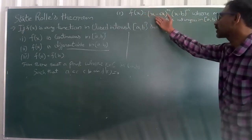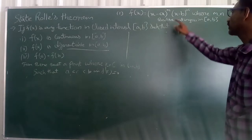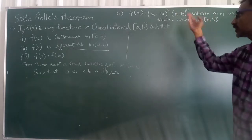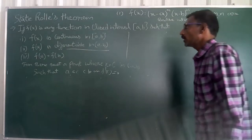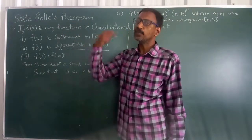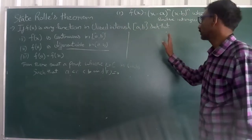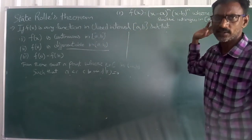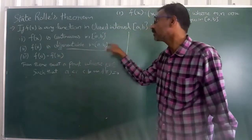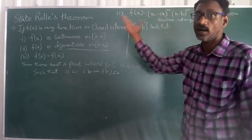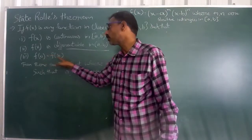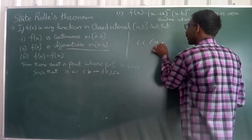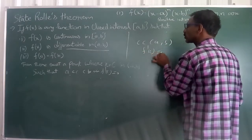State the Rolle's Theorem and verify the function f(x) = (x - a)^m · (x - b)^n, where m, n are positive integers in interval [a, b]. Rolle's Theorem states: let f(x) be any function in a closed interval [a, b] such that f(x) is continuous in [a, b], f(x) is derivable in (a, b), and if f(a) = f(b), then there exists a small c belonging to (a, b) such that f'(c) = 0. Then Rolle's Theorem is verified.